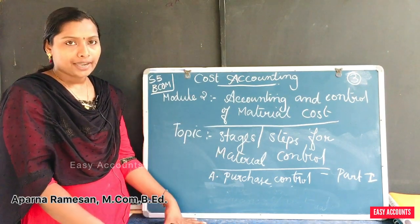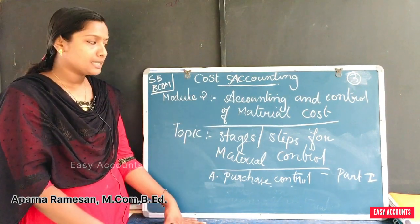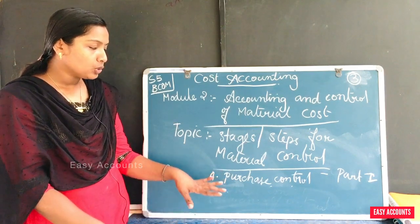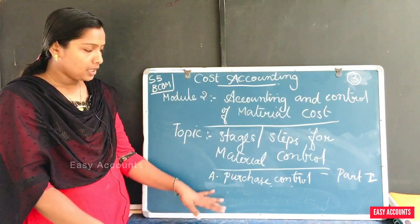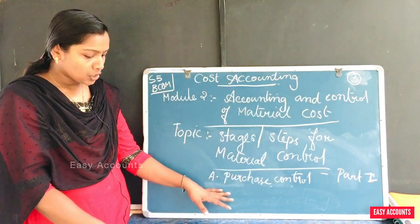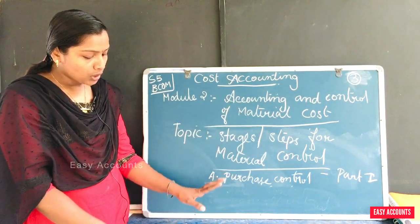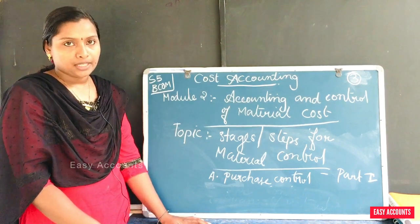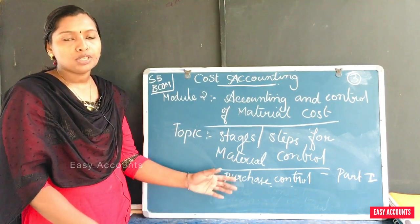We will cover Material Control and its stages. There are 3 steps: Purchase Control, Store Control, and Pricing of Material.